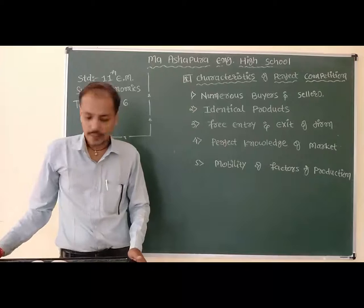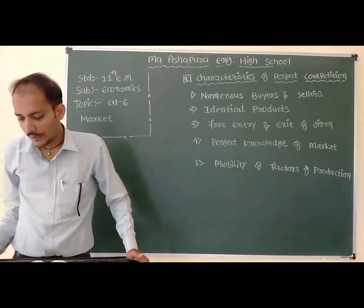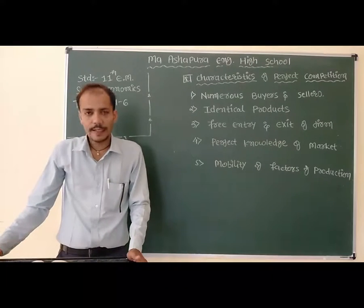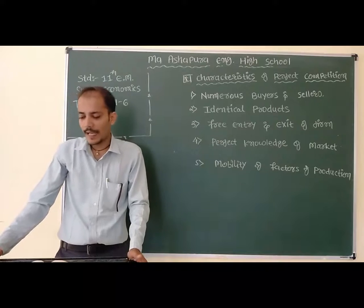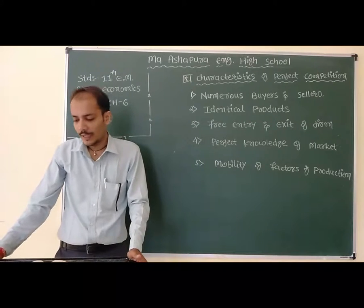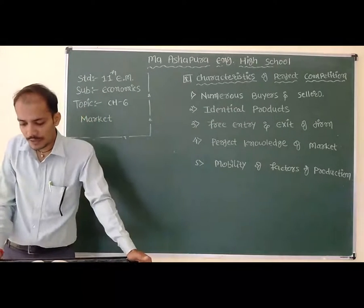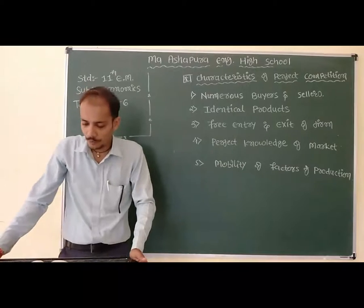Point number 5: Mobility of the factors of production. The four factors of production — namely land, capital, labour, and entrepreneur — are dynamic and mobile from a physical, professional, and usage point of view.